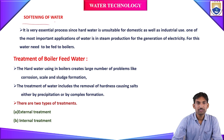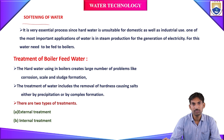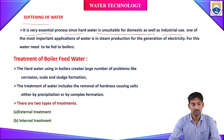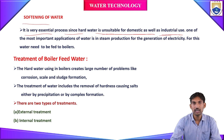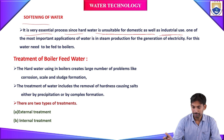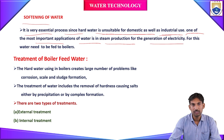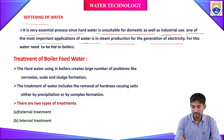What is the need for softening water? We have to convert hard water into soft water. It is a very essential process since hard water is unsuitable for both domestic as well as industrial use. One of the most important applications of water is steam production for the generation of electricity — first water produces steam, and from steam, electricity is generated.